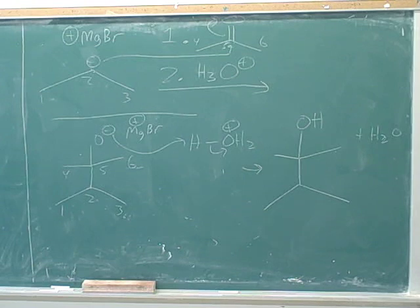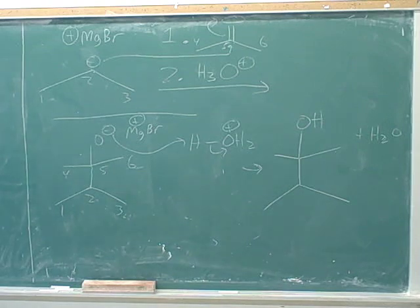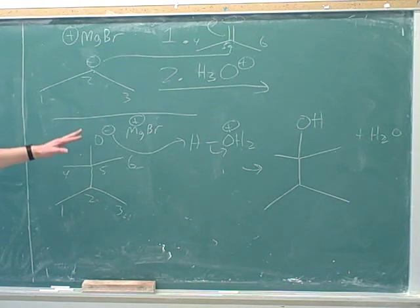A Grignard plus an aldehyde or a Grignard plus a ketone — both of those would give you an alcohol. That's good to know, but it wouldn't be the end of the world if you forgot it, because you should be able to figure it out by just working through the steps, like we just did over here.